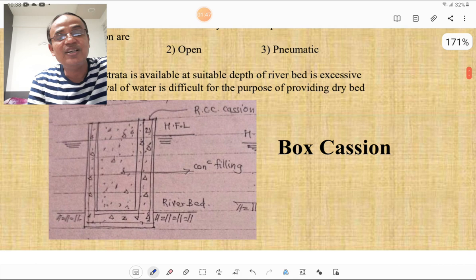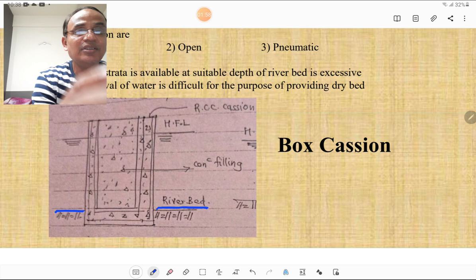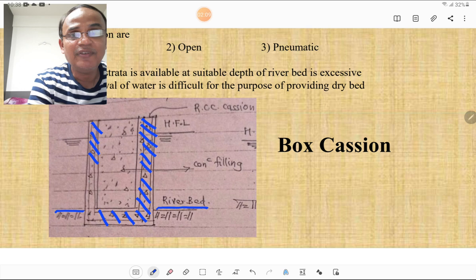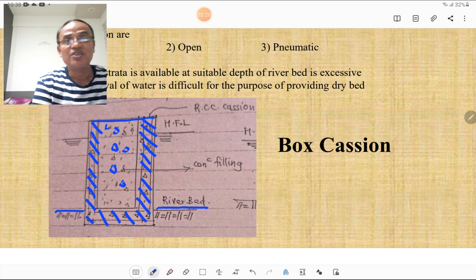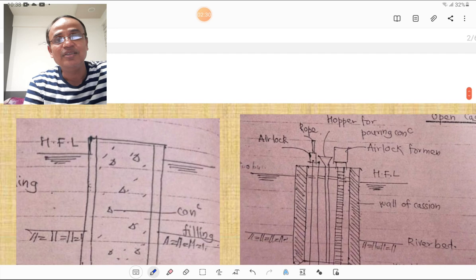Please look at this figure. This figure is of box caisson. This is the river bed and this is the RCC caisson. This RCC caisson is closed at bottom so it looks like a box and this box is filled up with concrete. This figure is very simple and self-explanatory.